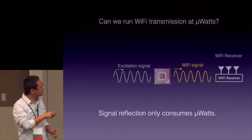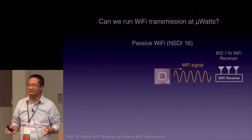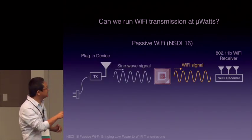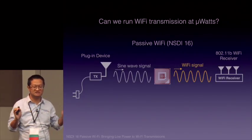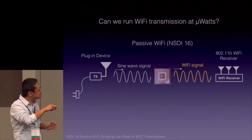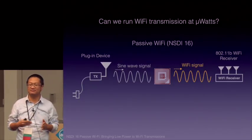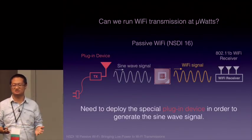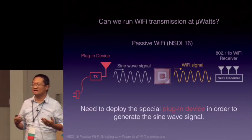The question is how to generate the excitation signal. One previous work, Passive Wi-Fi, published in NSDI this year, gives one possible answer: you go to the store and buy a special plug-in device that generates a sine wave signal — a pure single-tone signal. The Passive Wi-Fi tag is then able to convert the sine wave into a Wi-Fi signal and reflect it back to the Wi-Fi receiver, which decodes the tag information. It's a great idea. However, it requires buying and deploying special hardware, which is an extra deployment overhead.